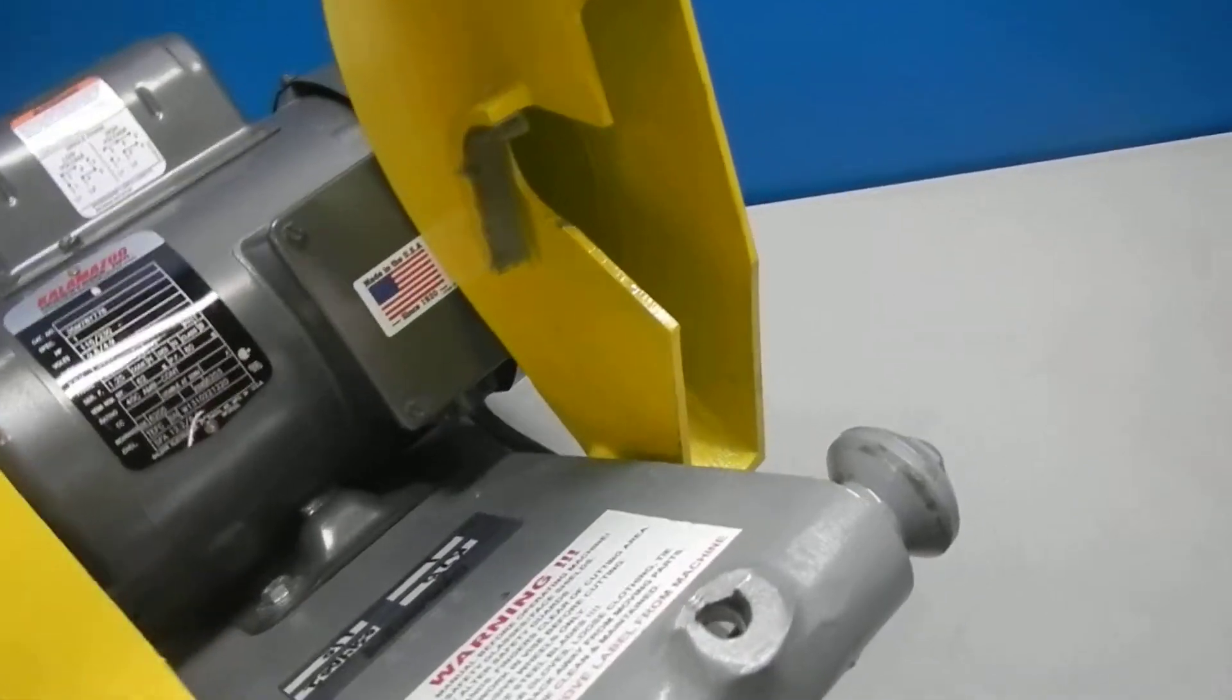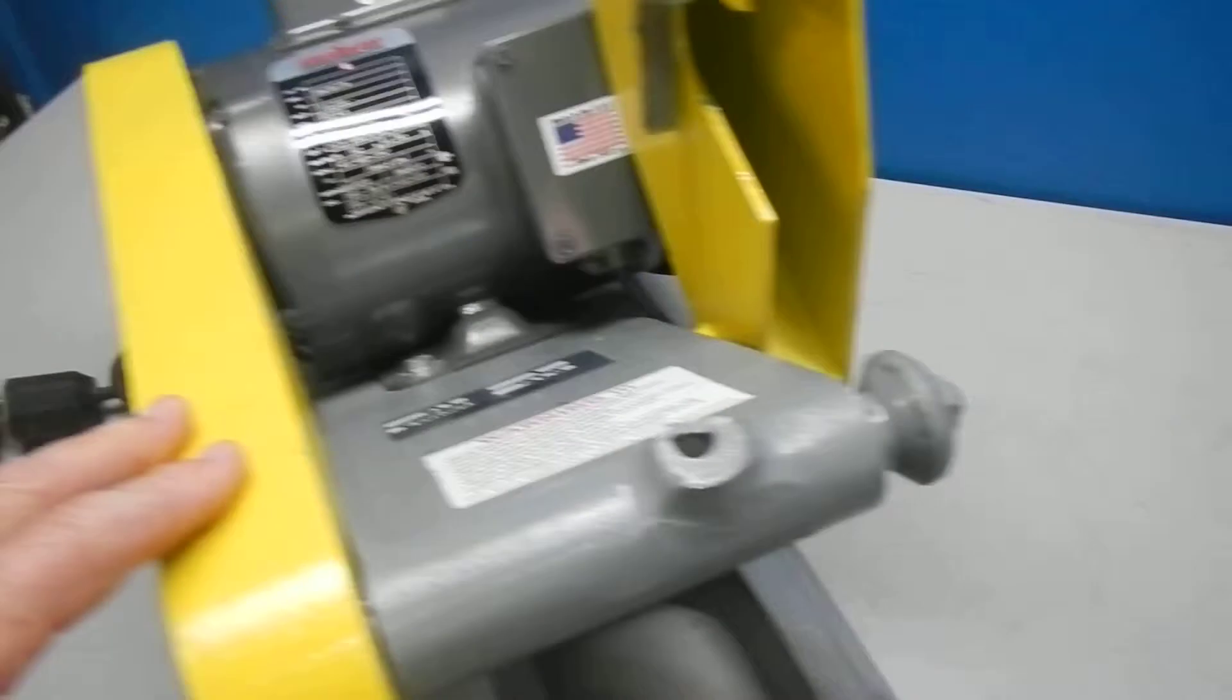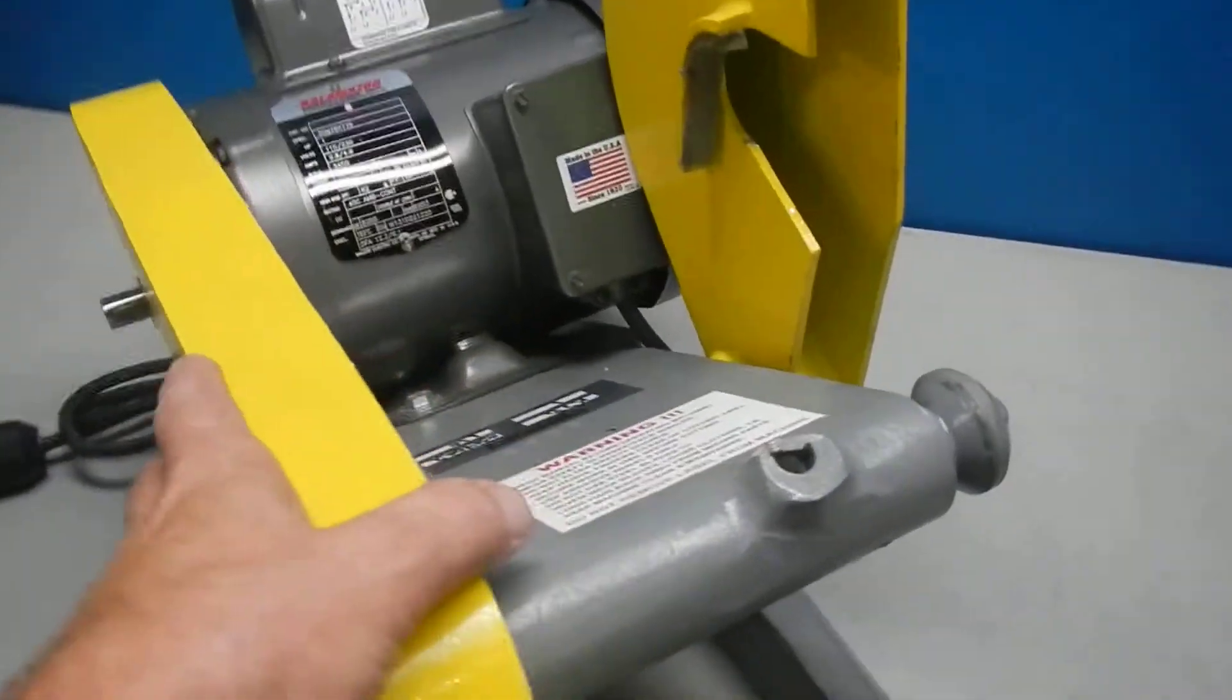This shroud here is a little loose. We had to put a new bolt in there. It needs to be adjusted. It's hitting the wheel right here. Other than that, it's in really good shape.